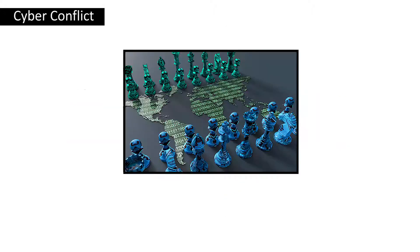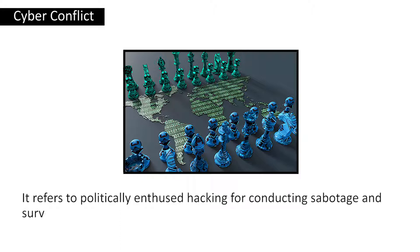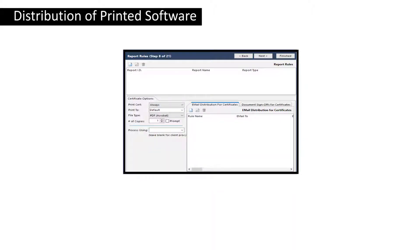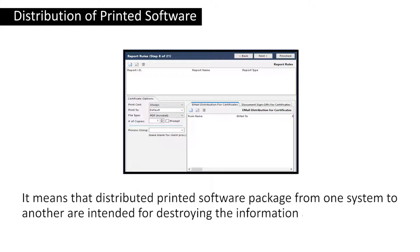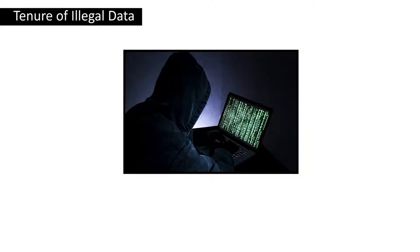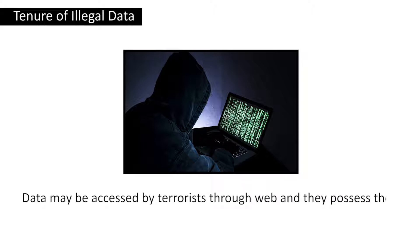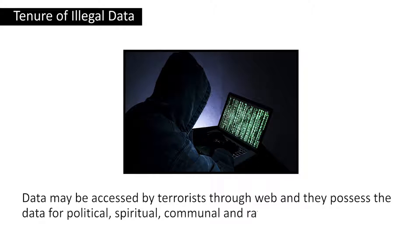Cyber conflict refers to politically motivated hacking for conducting sabotage and surveillance. Third is the distribution of pirated software — distributed pirated software packages from one system to another are intended for destroying the information and authorized files of the organization. Next is the tenure of illegal data: data may be accessed by terrorists through the web and they possess the data for political, spiritual, communal, and rational goals.